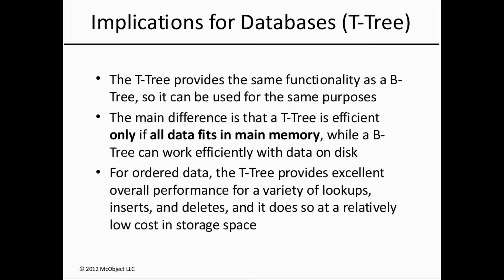Internal nodes keep their occupancy between predefined minimum and maximum numbers of elements. The T-tree is semantically identical to the B-tree, so it can be used for the same purposes. Because the tree can be deeper and each level of a tree equates to one access, it's not suitable for disk storage, because access in that case equals disk I/O, which we want to avoid. So the B-tree is better for disk storage, and the T-tree is better for in-memory storage. For ordered data in-memory, the T-tree provides excellent overall performance with a relatively low cost in storage space.